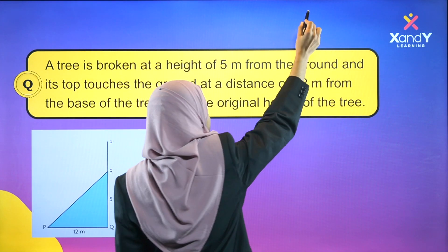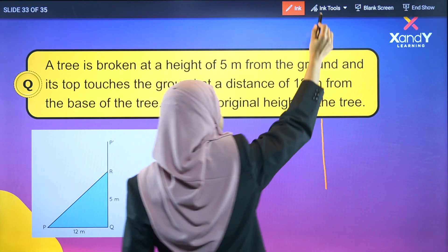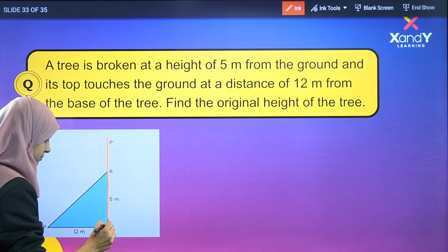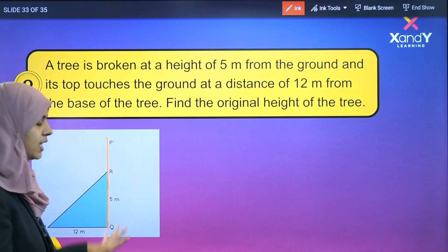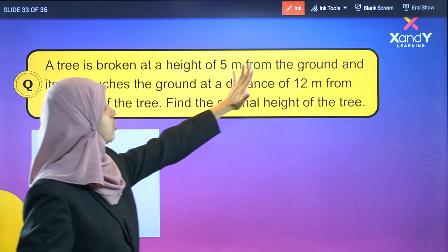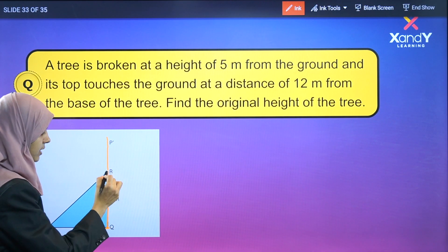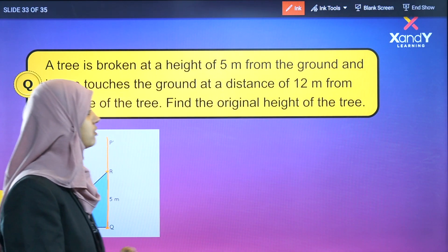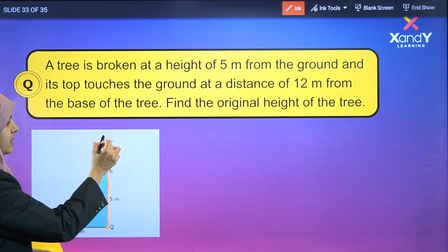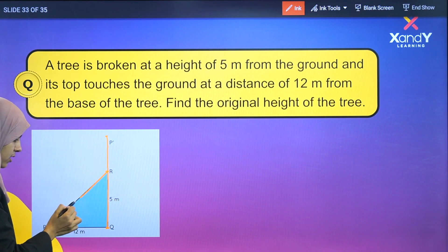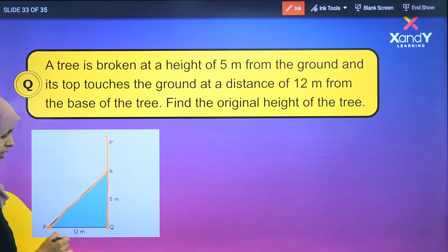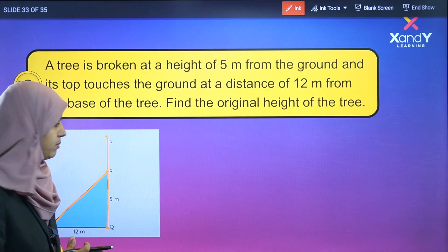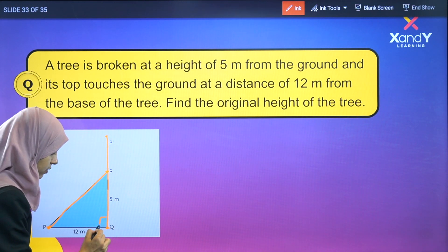So this is the tree height. A tree is broken at a height of 5 meters from the ground. The tree is broken, and its top touches the ground at a distance of 12 meters from the base of the tree. This distance is 12 meters. To find the original height of the tree, we have to form a right triangle.